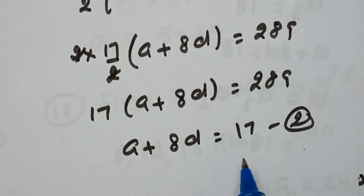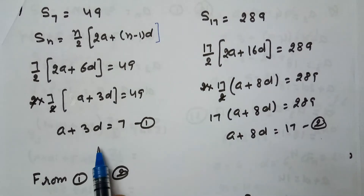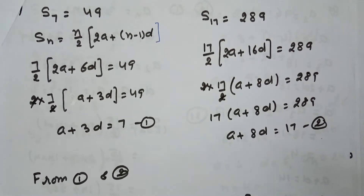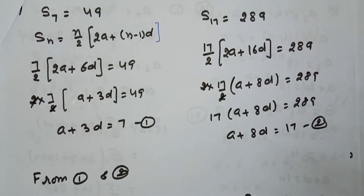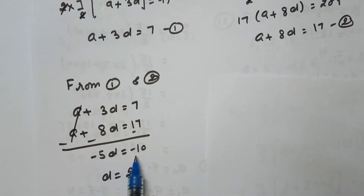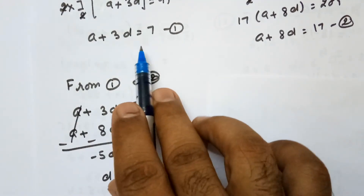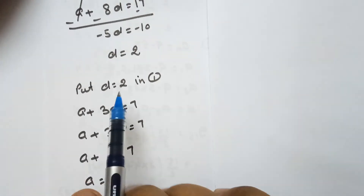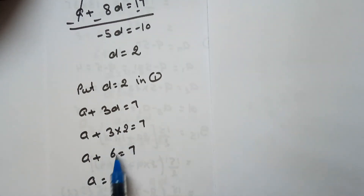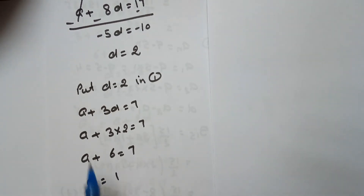This is our second equation. Now from equation 1 and equation 2, using the method of elimination, we will calculate the values of A and D. The coefficient of A is equal in both cases, so we subtract the two equations. A cancels, and we are left with minus 5D equals to minus 10, so D equals to 2. Substituting D equals to 2 into equation 1, A plus 3 into 2 equals to 7, so 2 into 3 is 6, and 7 minus 6 is 1, so A equals to 1.